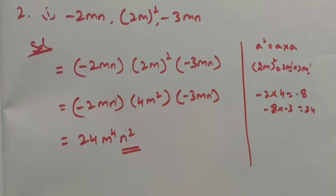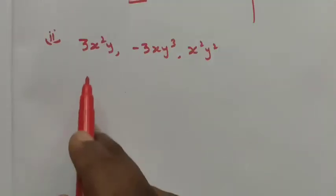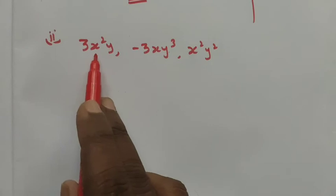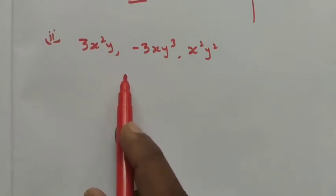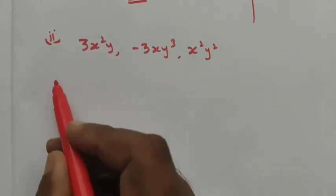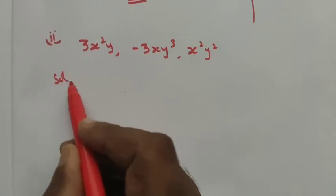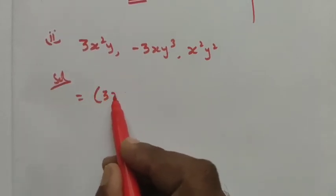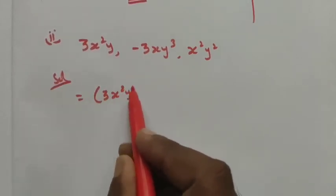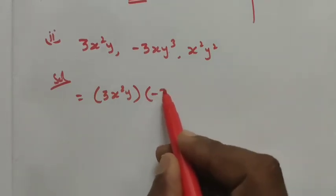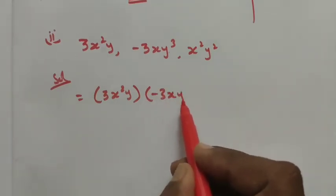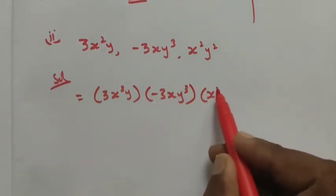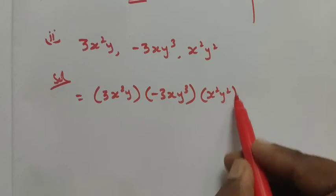Next, the second Roman number: 3x²y into minus 3xy³ into x²y². We want to multiply these terms, so I am using product brackets: 3x²y into minus 3xy³ into x²y².